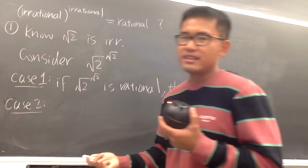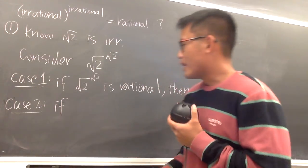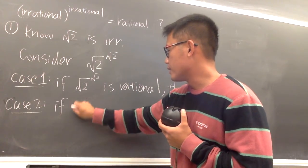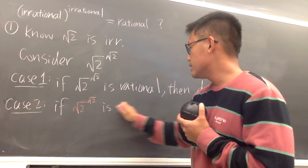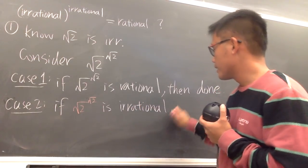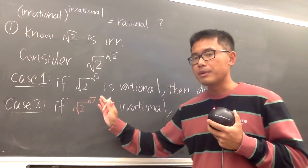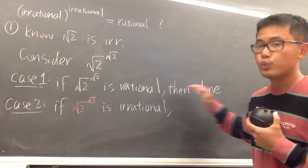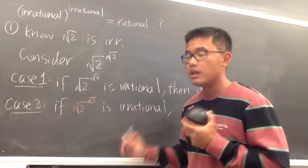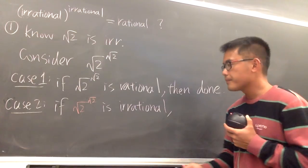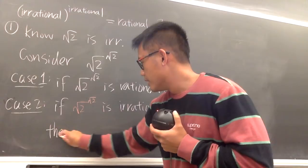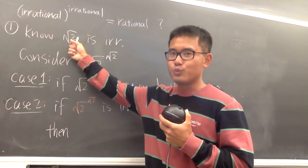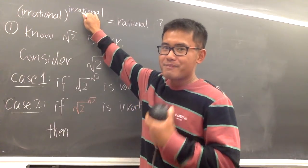Case 2. Suppose square root of 2 raised to the square root of 2 is irrational. I don't know anything about this yet, because I haven't done any proof. So I don't know which case we're in. But if we were in case 1, we're done. Now focusing on case 2 — suppose we know this is irrational. Then we have another irrational number to work with. And originally we have this one. So we want irrational raised to an irrational power.